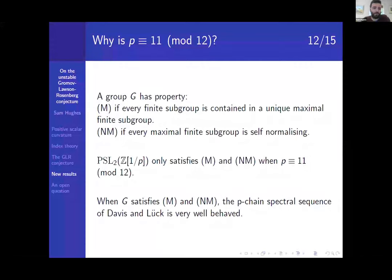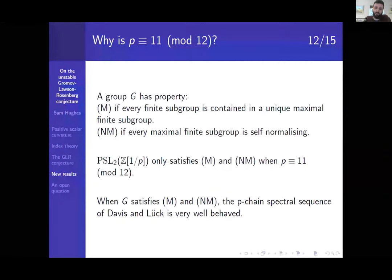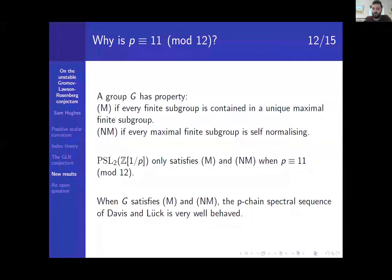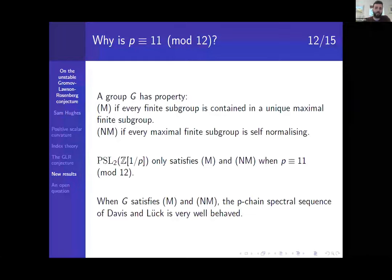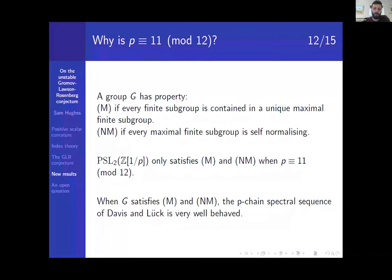So, I mean, my immediate question is why only p mod 12? Why is p only congruent to 11 mod 12? So I'll say a few words about that and then we'll wrap up. So a group G has property M if every finite subgroup is contained in a unique maximal finite subgroup, and NM if every maximal finite subgroup is self-normalizing. So these are kind of group theoretic properties, and they turn out to be quite important in the proof. So PSL₂(ℤ[1/p]) only satisfies M and NM when p is congruent to 11 mod 12. Essentially this comes from the way these groups can be realized as fundamental groups of graphs of groups. If you're not familiar with that, then just kind of black box this along with everything else I've said. But the idea then is that when G satisfies these two properties M and NM, there's a spectral sequence due to Davis and Lück, which is quite useful. You can compute stuff very explicitly with it and it kind of collapses quite nicely.